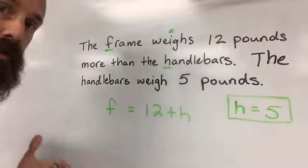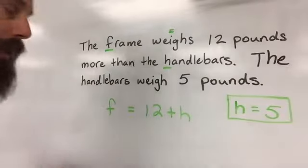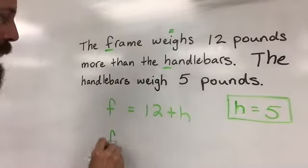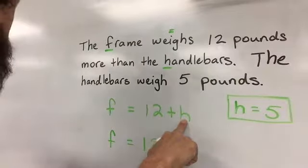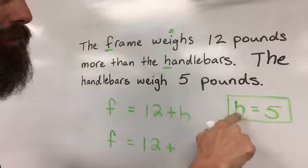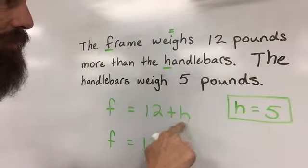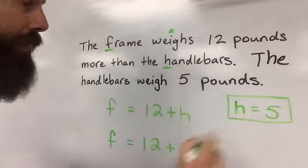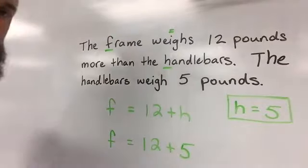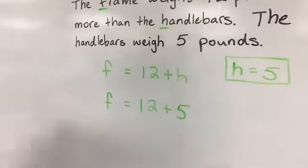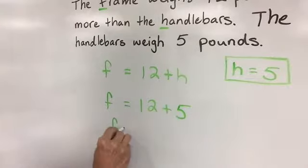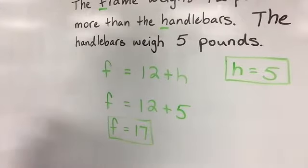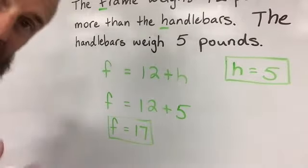If you know how to do the substitution, you can do that also. This is just the next step. You rewrite the equation below, except where it has the letter H, we know that the number that equals H is five. So instead of rewriting the H, we are going to rewrite the five. Now we can work the problem. F equals 12 plus 5. F equals 17. And that is the answer. Good luck with the rest of them.